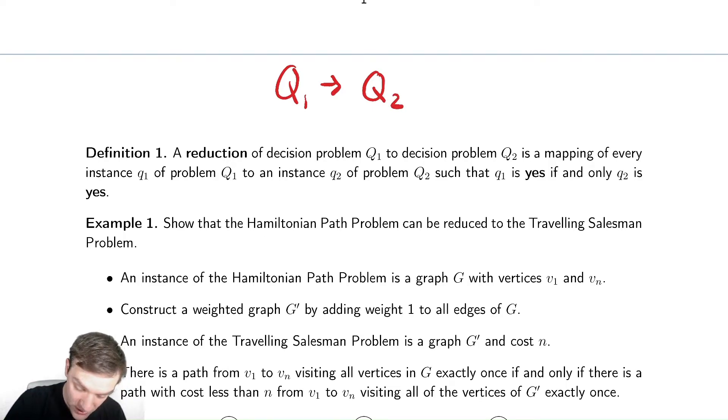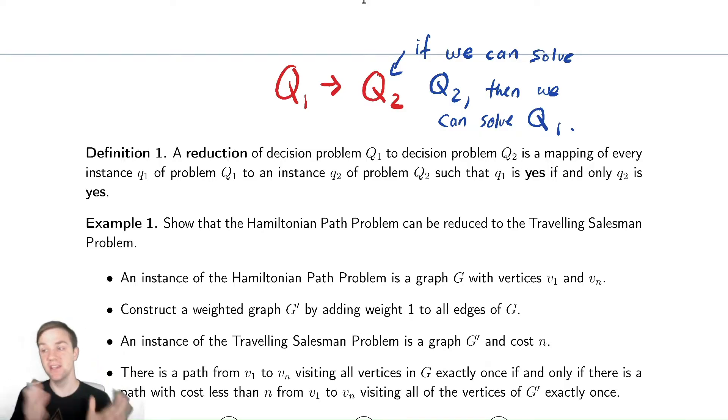If you can solve question 2, then we can solve Q1. This is the idea. We're taking Q1 and mapping it in some way to Q2. We're saying, if we do the following sort of trickery, we can rewrite this problem in terms of this problem.